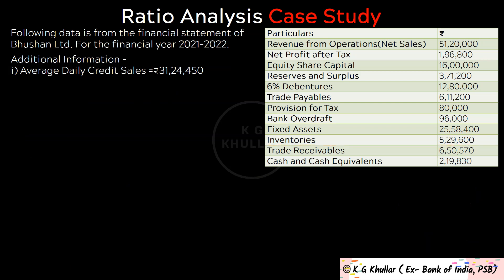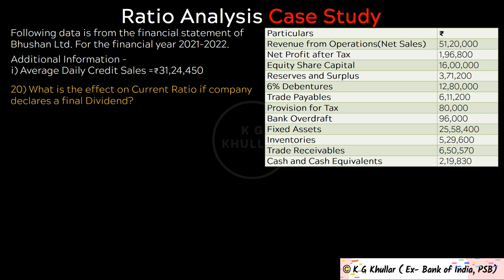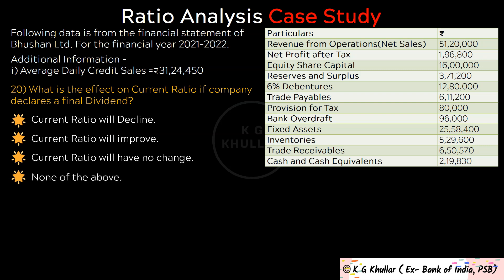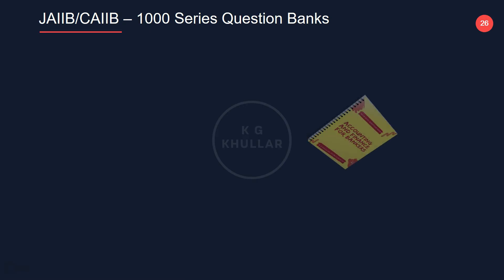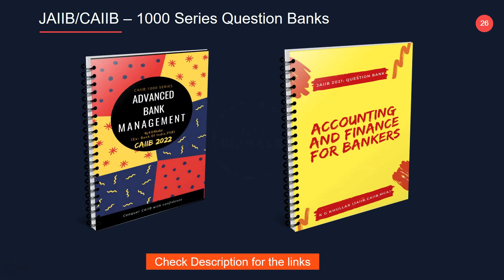Finally, we have reached the last question of our mock test. What is the effect on current ratio if the company declares a final dividend? Declaration of dividend will increase current liabilities, but current assets will remain the same, so the current ratio will decline. The correct option is option A. With this I wind up this lecture. Please revise this case study again and again before your examination since many important ratios and terms are discussed here. Only practicing questions will make you clear your examination, so get your 1000 series question bank from the links in the description. Thank you and see you in another lecture.